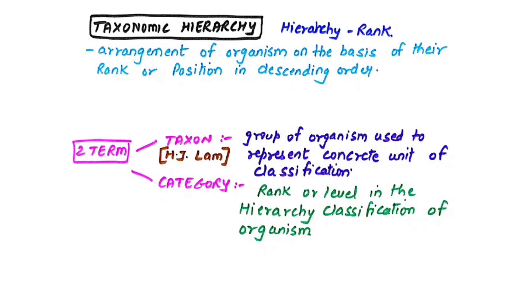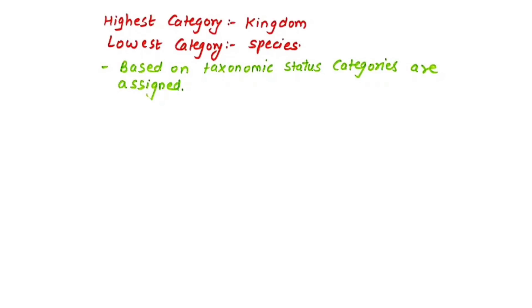There are two key terms: taxon and category. A taxon is a group of organisms representing a concrete unit of classification — the position remains constant even if the occupant changes, like a school principal position. The scientist H.J. Lam coined the word 'taxon.' A category is a rank or level in the hierarchy — for example, a Category 1 officer holds a higher rank than a Category 3 officer. The highest category is kingdom and the lowest is species.